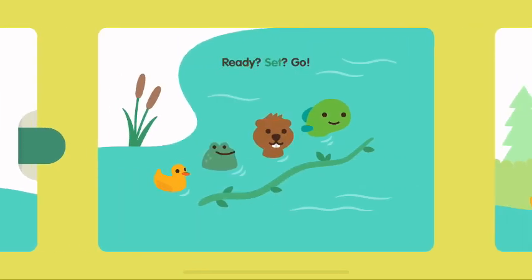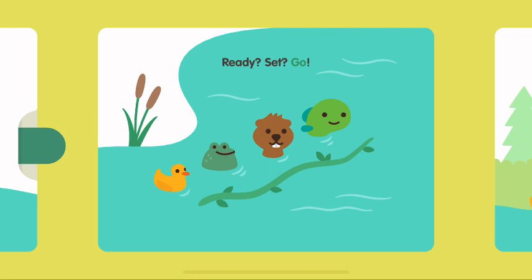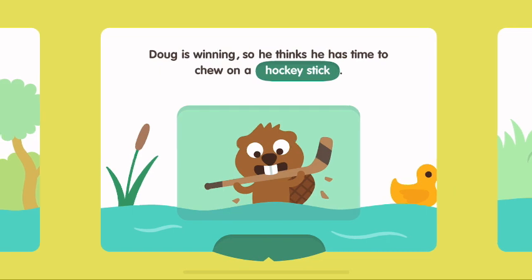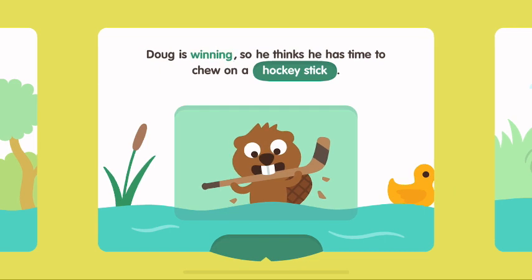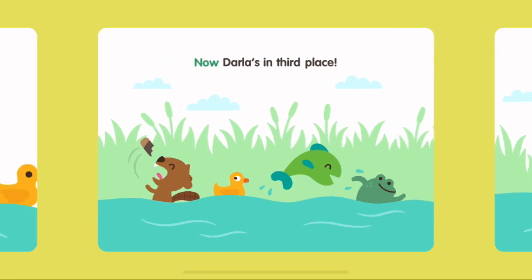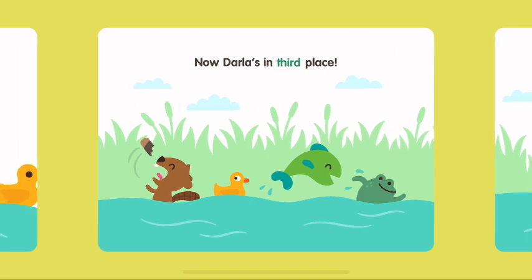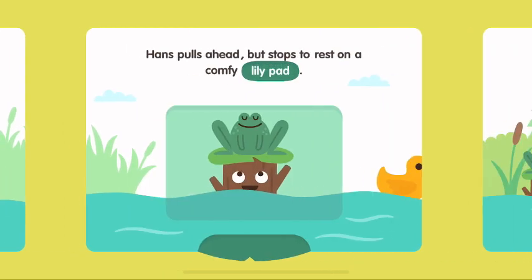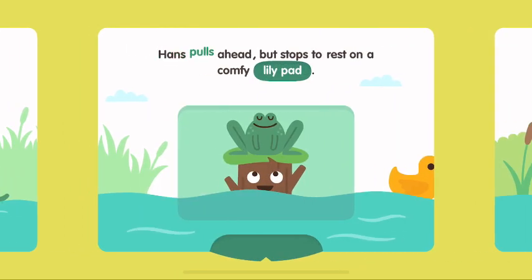Ready, set, go! Darla starts off in fourth place. Doug is winning, so he thinks he has time to chew on a hockey stick. Now Darla's in third place. Hans pulls ahead, but stops to rest on a comfy lily pad.